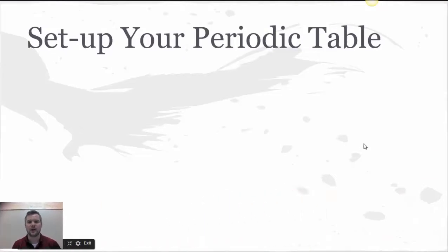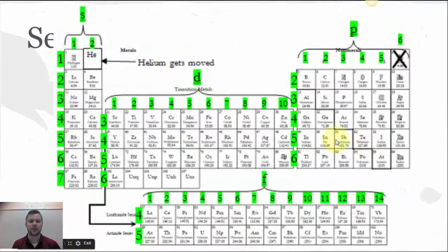So the first thing is to set up your periodic table. On your periodic table you need to add some information. You should already have these numbers along the rows on the left-hand side. But now I need you to add an S above columns 1 and 2, and then label it 1 and 2. I need you to add a P above columns 3 through 8. Notice that helium moved over next to hydrogen. I need you to add a D above columns 1 through 10 in the transition metals. And then lastly F above the lanthanide and actinide series.